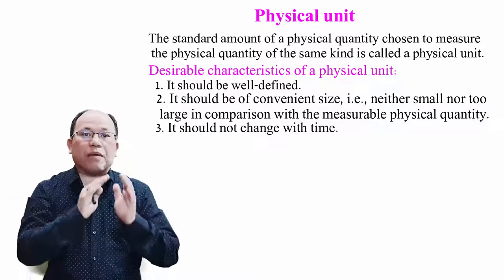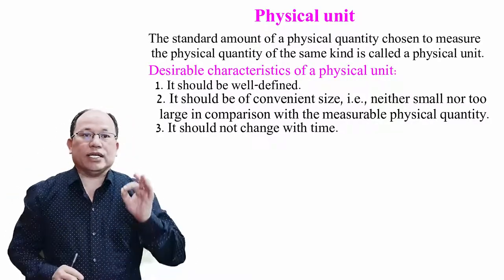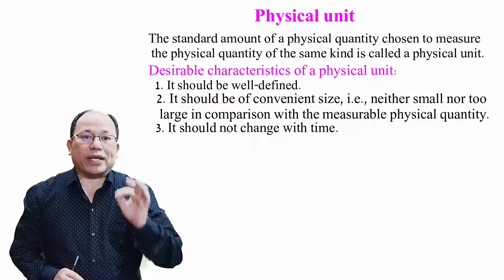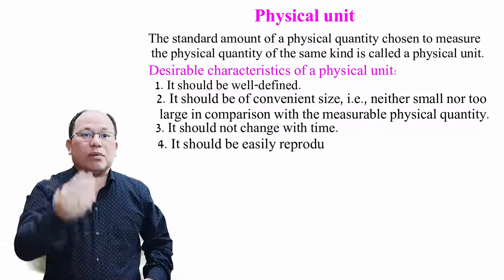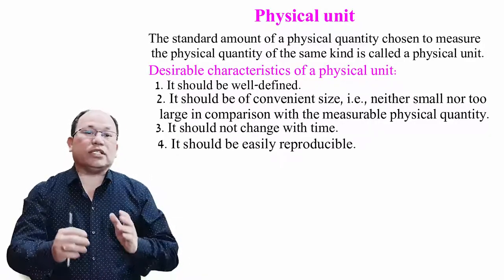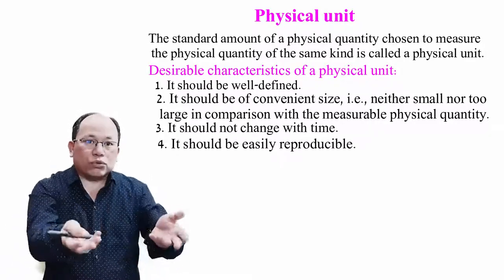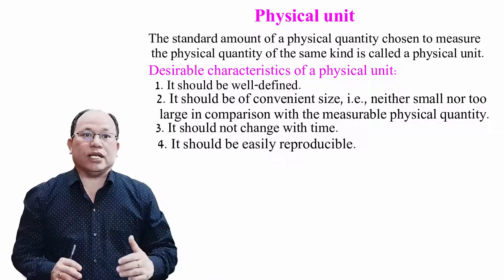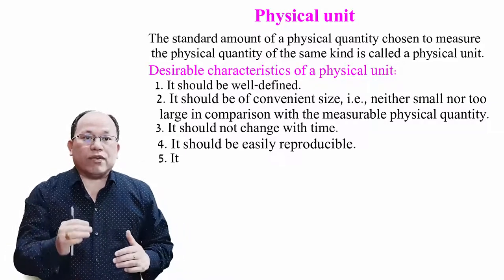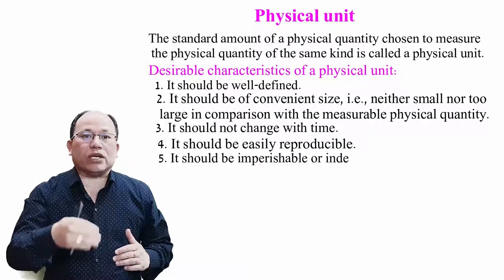The unit of a physical quantity should be easily reproducible. By chance, if a unit is destroyed or lost, it should be reproducible.